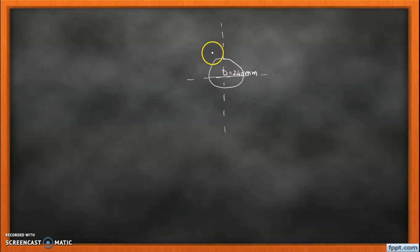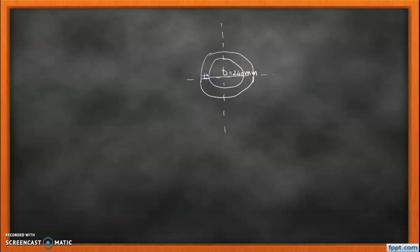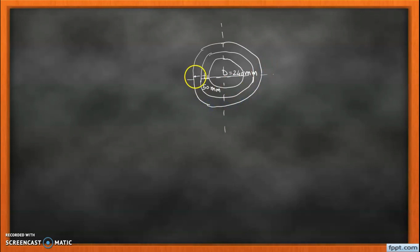This pipe is covered with two insulation layers. The first layer has a thickness t1 of 50 millimeters, and the second layer of insulation has a thickness t2 of 40 millimeters.